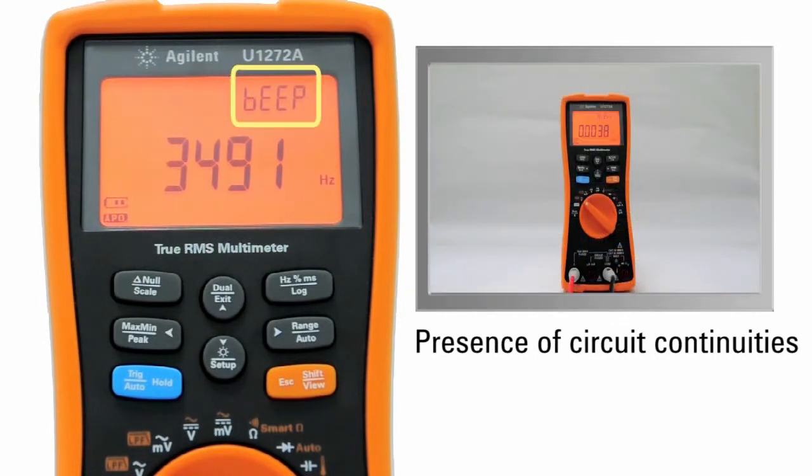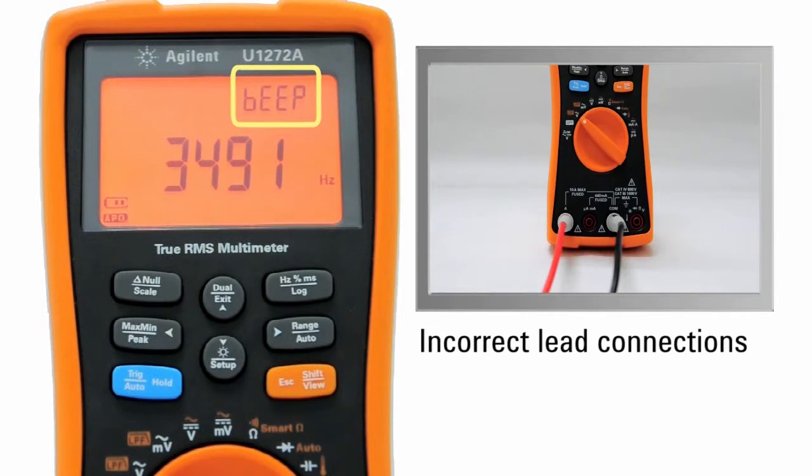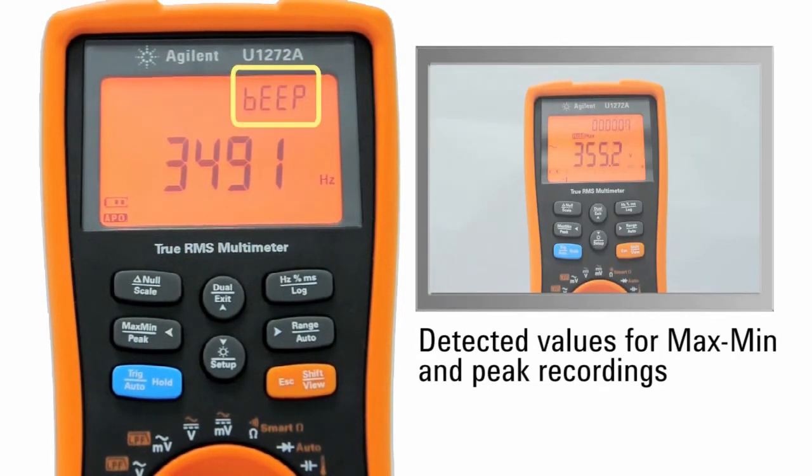It also alerts for operator errors such as incorrect lead connections for the selected function, and newly detected values for max min and peak recordings.